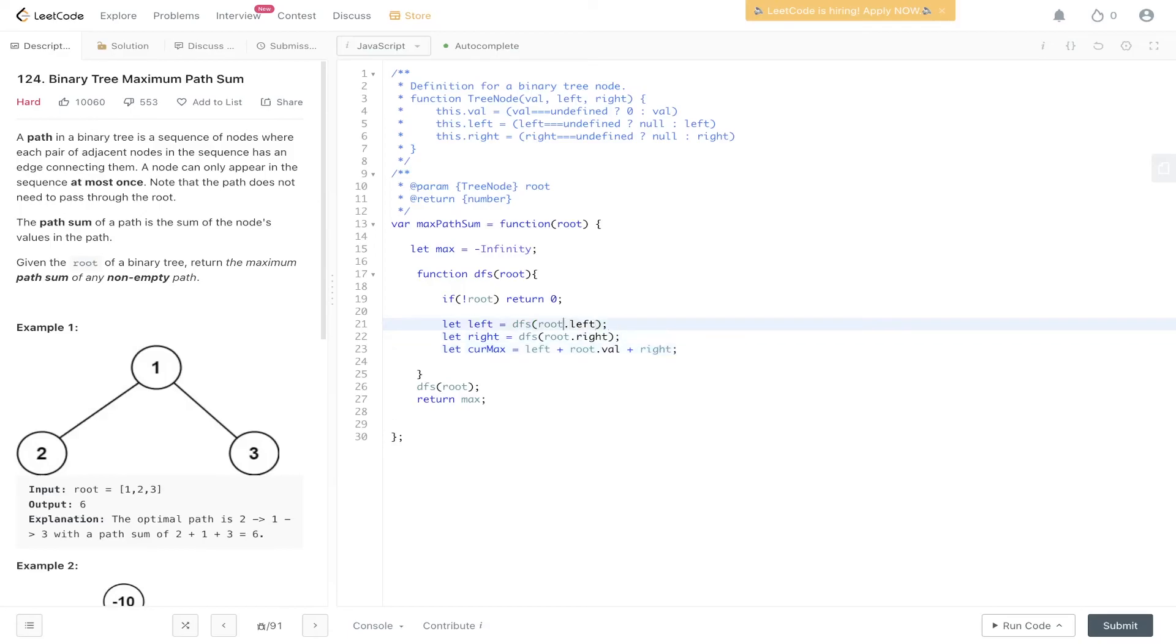And the way we do that is by using math.max and comparing the left side with 0 and returning whichever value is greatest. And we can do the same for the right, 0, DFS root.right. This way we're always going to be returning a positive value, so we're never going to be decreasing the overall maximum path sum.